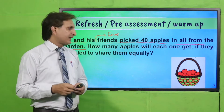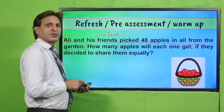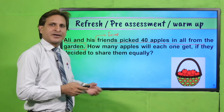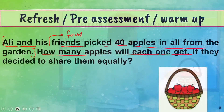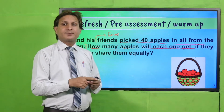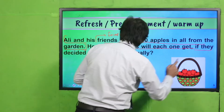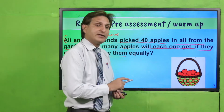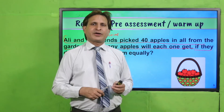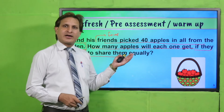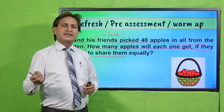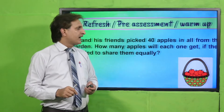Ali apne chaar doston ke saath baag mein jaata hai, wahan se 40 apples pick karta hai. Ab yahan tak first portion complete hua. Required factors: given factors first statement mein hain. How many apples will each one get, if they decided to share them equally? Har ek ke paas kitne apples honge? Calculate karein, methodology use karein, notebook par solve karein, phir teacher ko show karwayein.